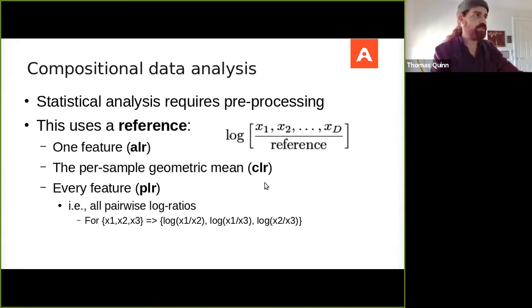Whichever of these three approaches you take, the equation you use would look something like this, where you take the log of the different feature input, x1, x2, all the way up to the final one, xd, and you divide them by the reference that you've computed.